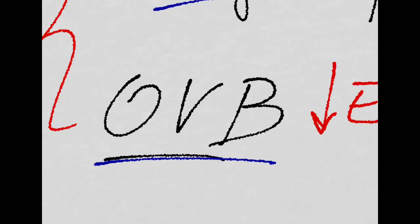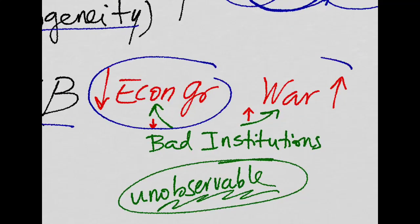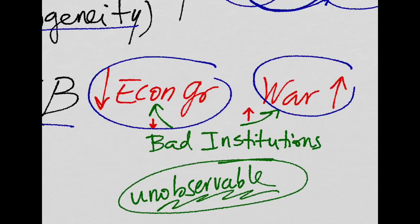The second problem with this simple regression is the omitted variable bias. There is a big chance that there is something else that is both affecting economic growth and the probability of conflict at the same time, simultaneously.